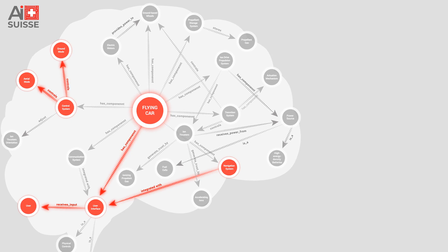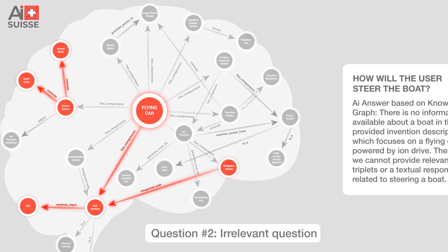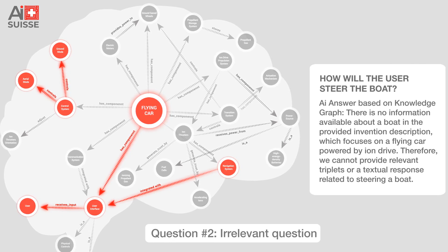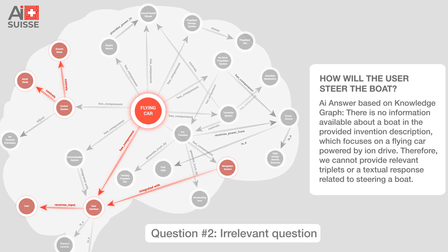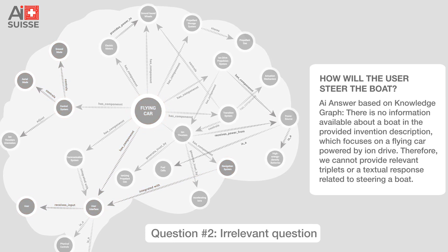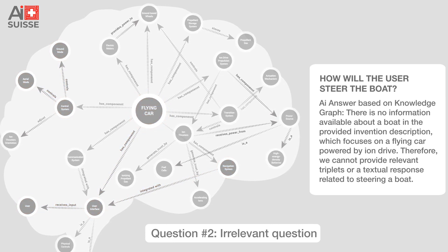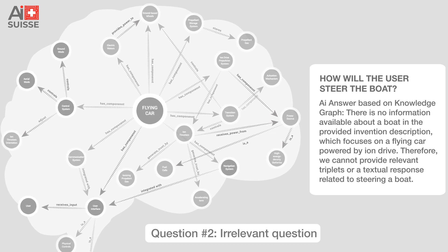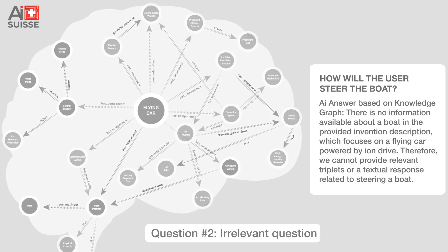Now if you ask a question that is irrelevant — 'How do I steer the boat?' — we see that the knowledge graph brain remains inactive and we're able to give a proper response.